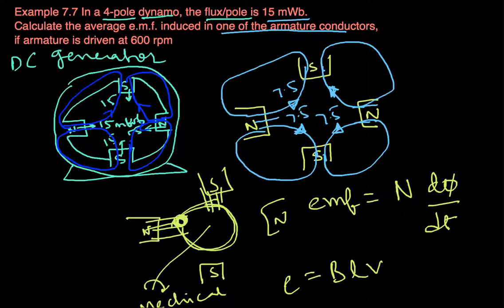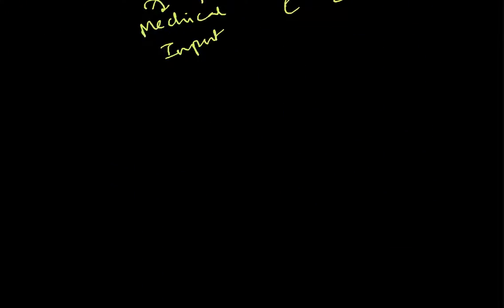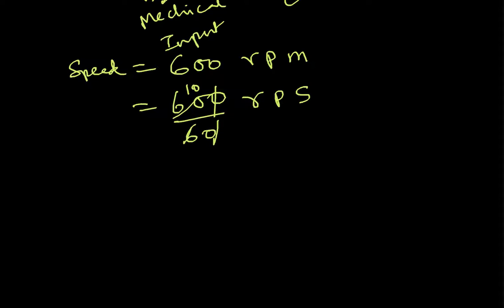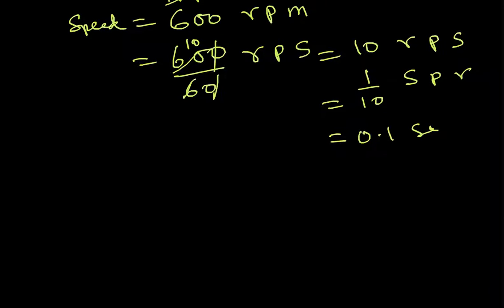For this problem, N equals 1 (one armature conductor). dΦ is the change in flux. The speed is 600 revolutions per minute, which is 600 divided by 60, giving 10 revolutions per second. Inverting that gives 1/10 seconds per revolution, which is 0.1 seconds per revolution.